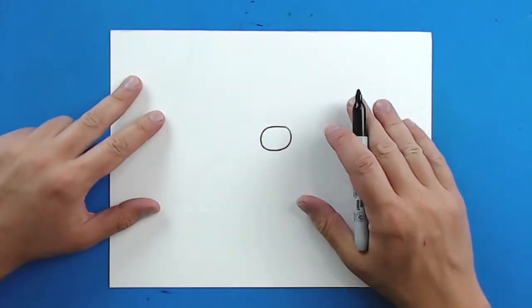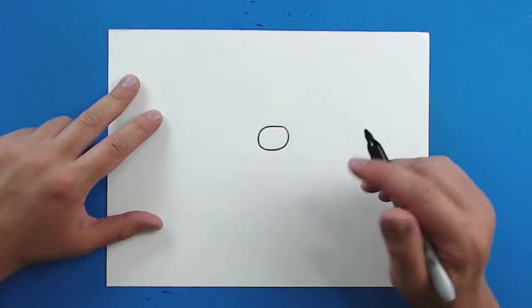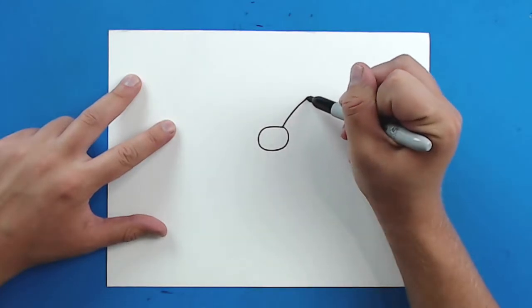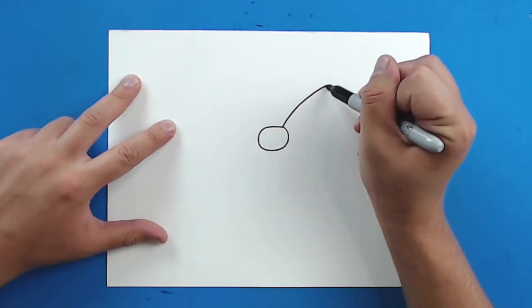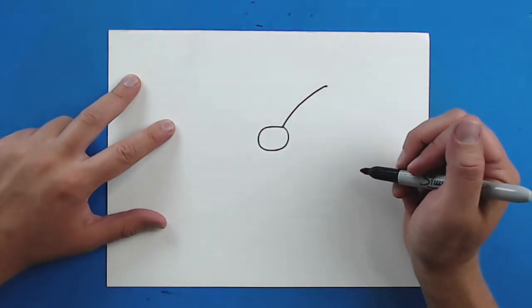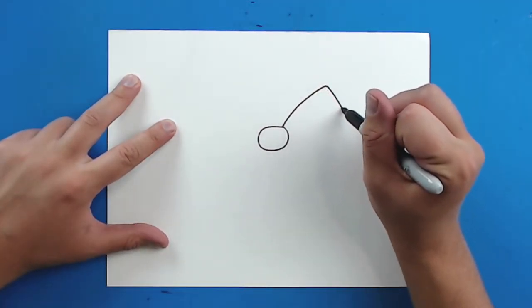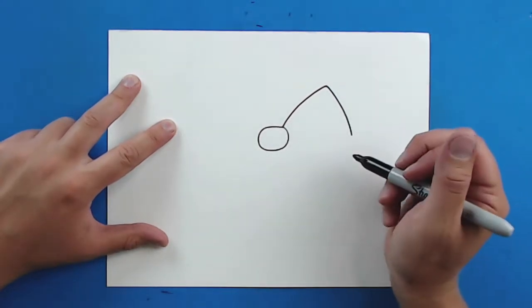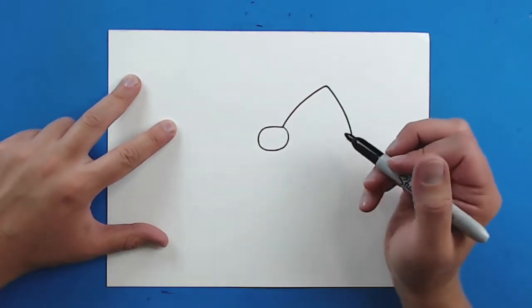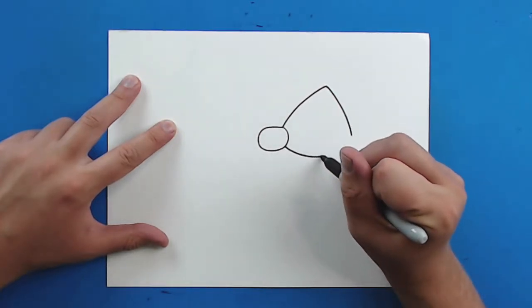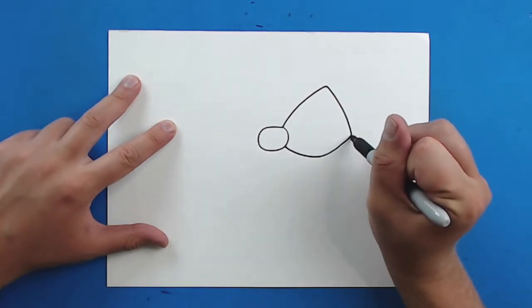Now after you have that, we want to draw the different parts of the bow. So I'm going to start right here and draw a line that goes up like this. Then I'm going to come down at an angle, and then go down and then back up right here.